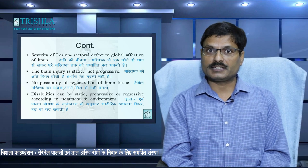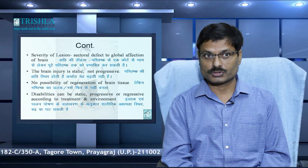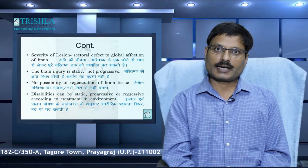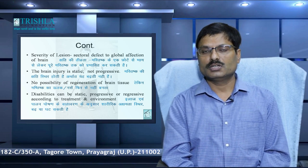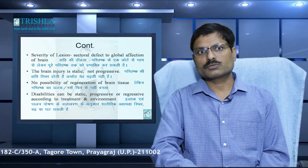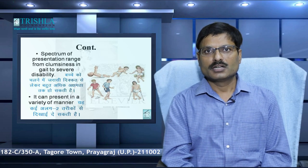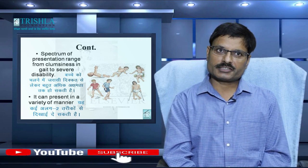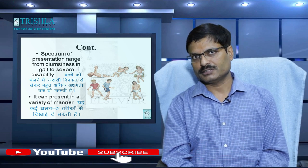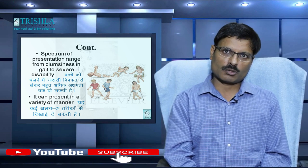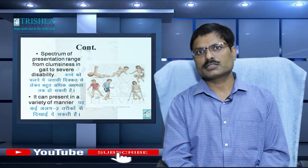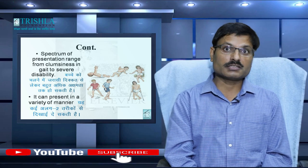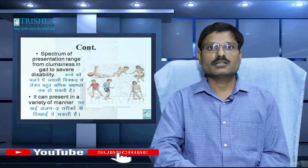The severity of the lesion depends upon the site and extent of the lesion in the brain. We know that brain injury is static — it is not progressive — but there is very very rare possibility of regeneration of brain tissue, so regeneration of brain tissue is not possible by any means. Disability can be static, progressive, or regressive depending upon what kind of treatment is given and what the environment of the child is in family situations. The spectrum of presentation ranges from clumsiness in gait to severe disability — on one hand the child looks nearly normal, and on the other the child is very severe and completely bedbound.